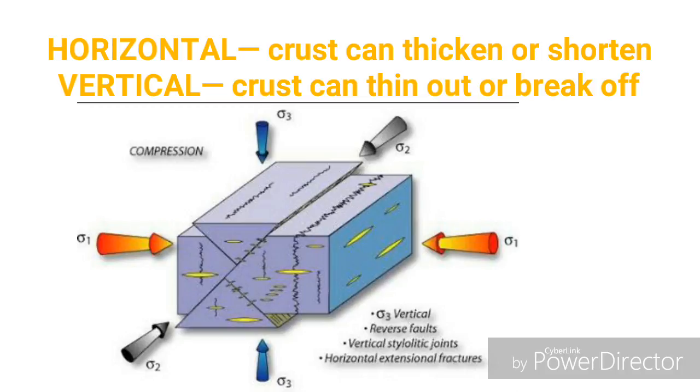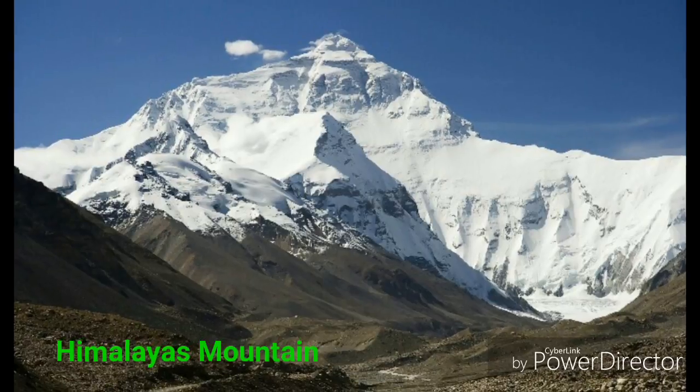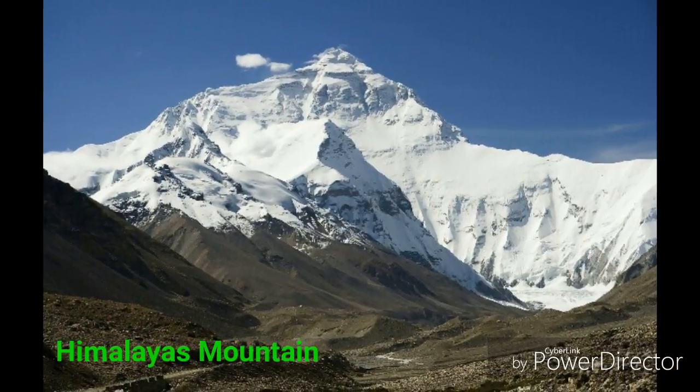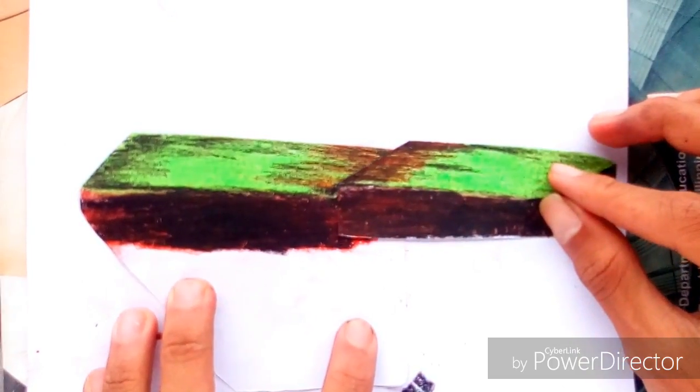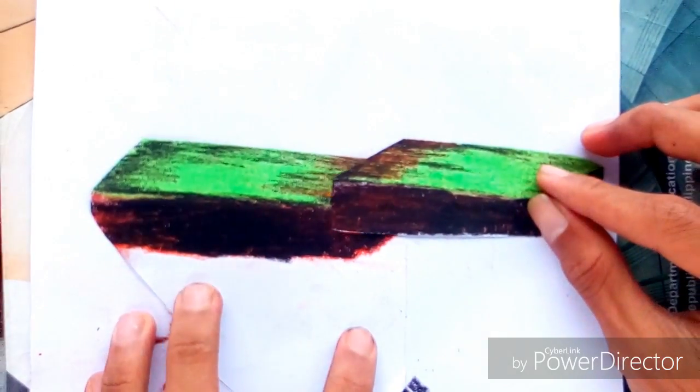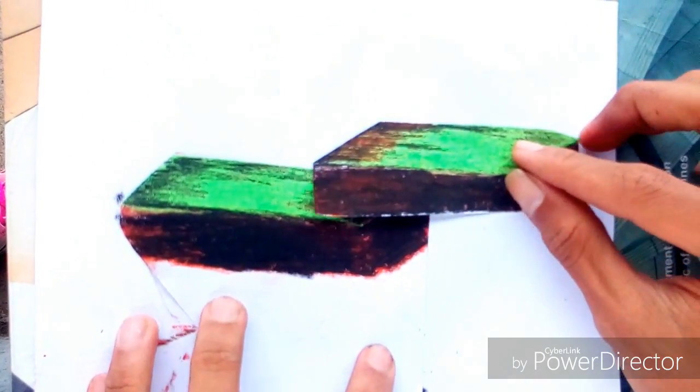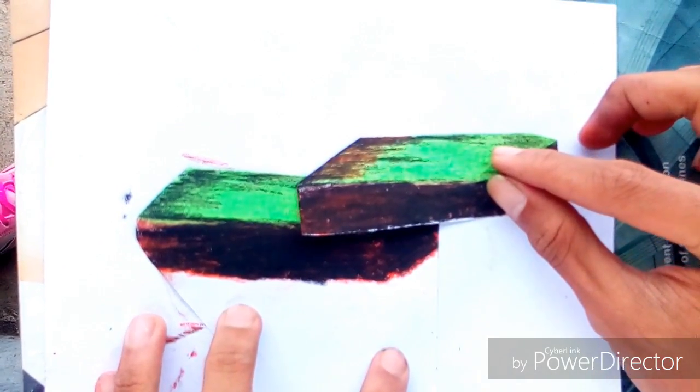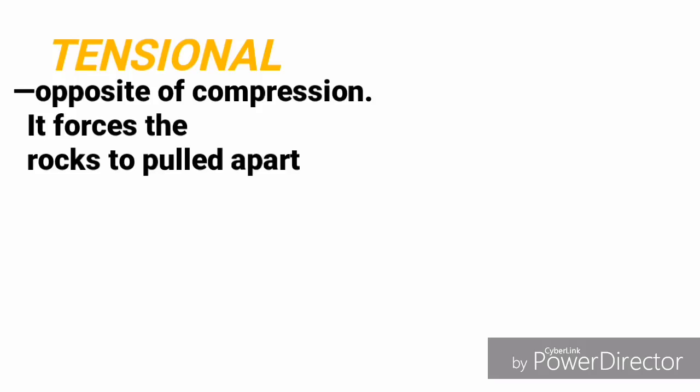In horizontal compression stress, the crust can thicken or shorten, while in vertical compression stress, the crust can thin out or break off. Mountains are a result of high-impact compression stress caused when two plates collide.